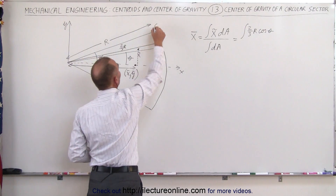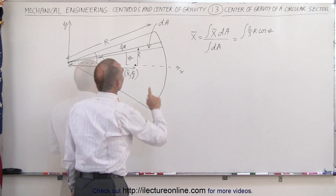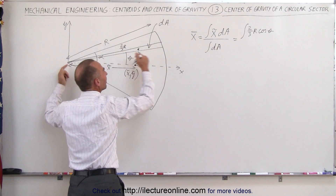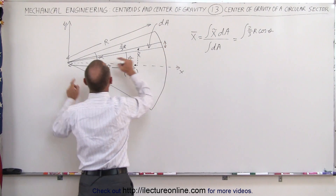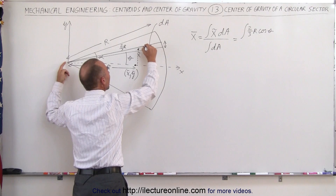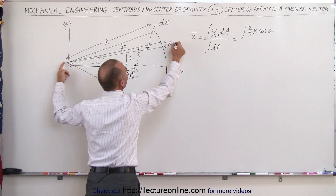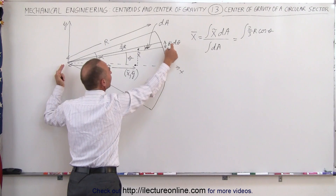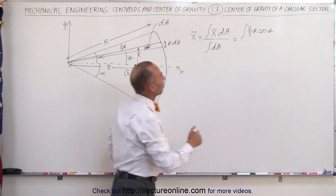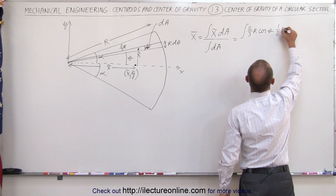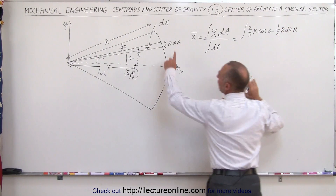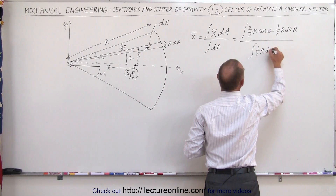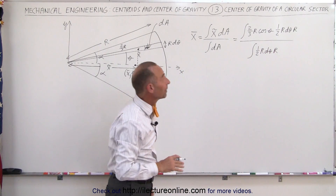Then we multiply by dA. This little slice is triangular in shape, so dA would be half the base times the height. The base can be found by multiplying the radius times the angle d theta of that small slice, so the base is r dθ. To find dA we take half the base, which is ½ r dθ, times the height r, giving dA = ½ r dθ · r. We divide by the same integral of ½ r dθ · r in the denominator.